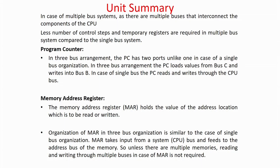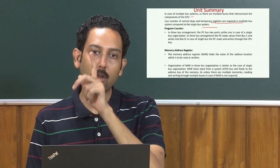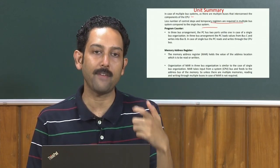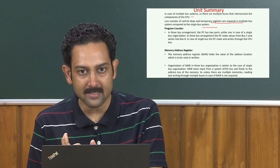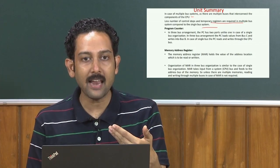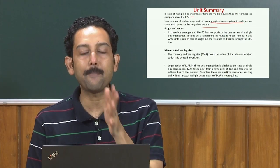In multiple bus systems there are multiple buses connecting different components of the CPU. There will not be a single data and address bus — there can be multiple buses to transfer signals. Fewer control signals and temporary registers will be required. For example, in a single bus architecture, if you want to add two numbers A plus B but there is only one path, you have to intermediately store the value of A in a temporary register, then feed B directly to the ALU, then store the result temporarily before writing it back to the bus.